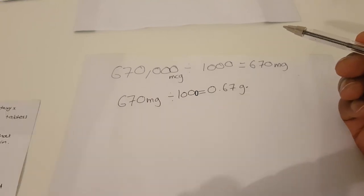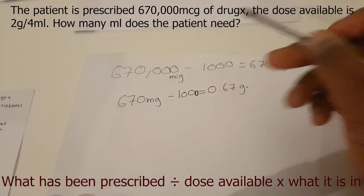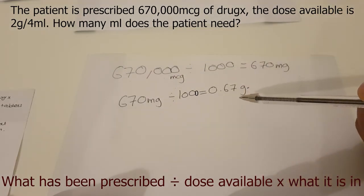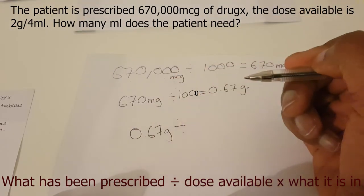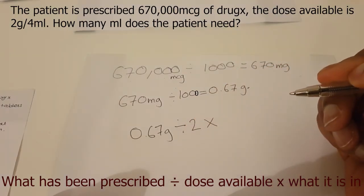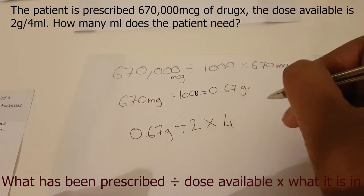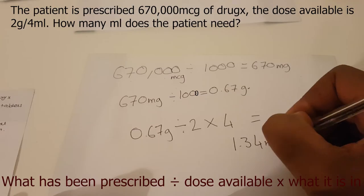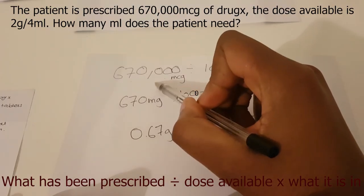Using the same formula — what has been prescribed divided by the dose available multiplied by what it is in — 670,000 micrograms, equivalent to 0.67 grams, has been prescribed. So we do 0.67 grams divided by 2 grams, multiplied by 4, because there are 2 grams per every 4 mils. That gives us the answer of 1.34 mils.